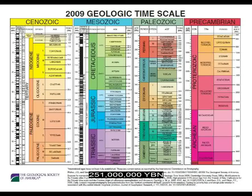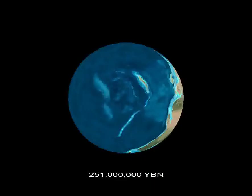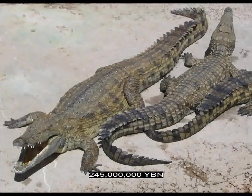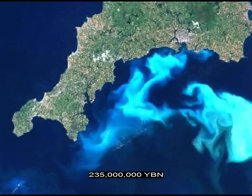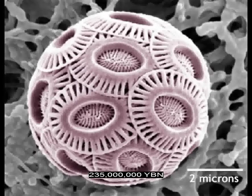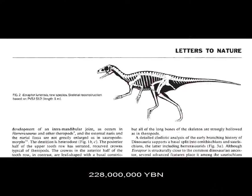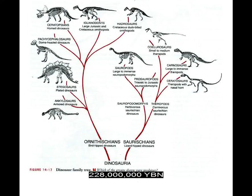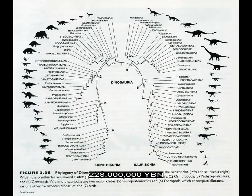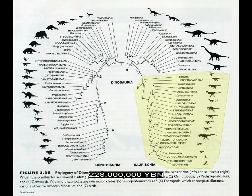The supercontinent Pangea forms. Ray-finned fishes — bowfins. Reptiles Crocodilia evolve — crocodiles, alligators, and caimans. Protists haptophyta — coccolithophores. Reptiles dinosaurs evolve. Dinosaurs divide into two major lines: Ornithischians (bird-hipped dinosaurs) and Saurischians (lizard-hipped dinosaurs). Saurischian dinosaurs split into the Sauropodomorpha and the Theropoda. Sauropodomorphs are mostly plant-eating and include the large long-necked dinosaurs like Apatosaurus. Theropod dinosaurs are bipedal and carnivorous, and include Allosaurus, Tyrannosaurus, and Velociraptor. All birds descend from a theropod ancestor.